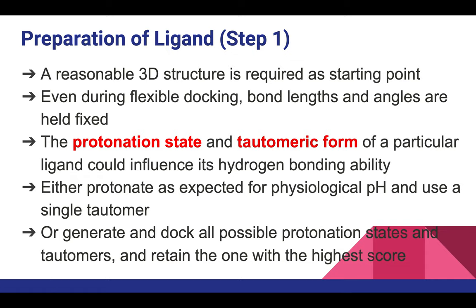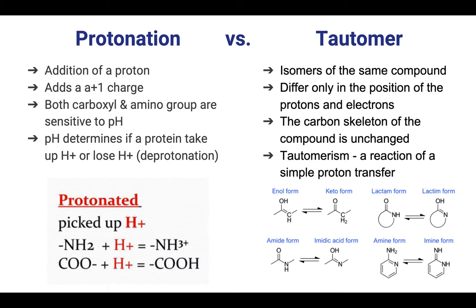The protonation state and tautomeric form of a ligand can influence its hydrogen bonding ability. You can use the protonation state expected for physiological pH as a single tautomer, or generate and dock all possible protonation states if you are unsure which to use. You retain the one with the highest score afterward.